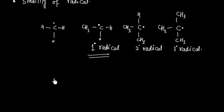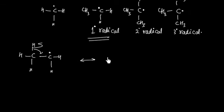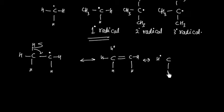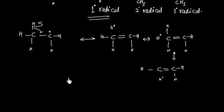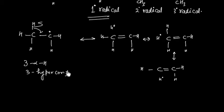For a primary radical, we can write three hyperconjugating structures — we remove one electron from a C-H bond and one electron goes to hydrogen, giving CH double bond CH. We can break each of the three carbon-hydrogen bonds. So we have three hyperconjugating structures and three alpha hyperconjugable hydrogens.